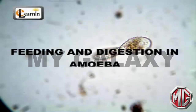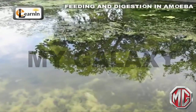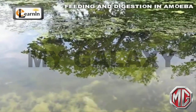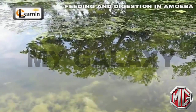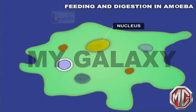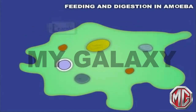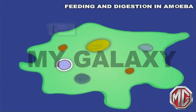Feeding and Digestion in Amoeba. Amoeba is a single-celled microscopic organism mostly found in pond water. It has a cell membrane, a rounded dense nucleus, and small bubble-like vacuoles in its cytoplasm. It changes its shape and position constantly.